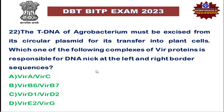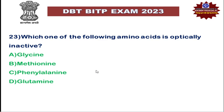Next question: T-DNA of Agrobacteria must be excised from its circular bacteria for transfer into a plant cell. Which complex of proteins is responsible for DNA nicking at the left border and right border of the sequence? The correct answer is VirD1 and VirD2, because VirD2 codes for an endonuclease enzyme which nicks the T-DNA at the right border. Please check the part 1 video where I discussed the functions of various Vir genes.